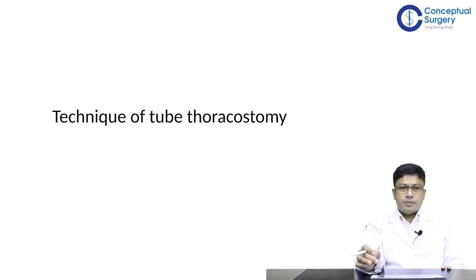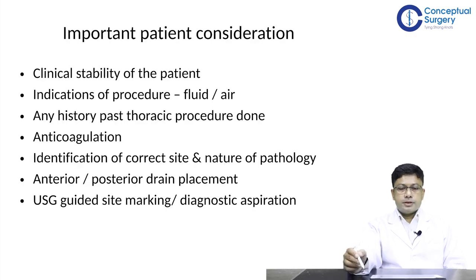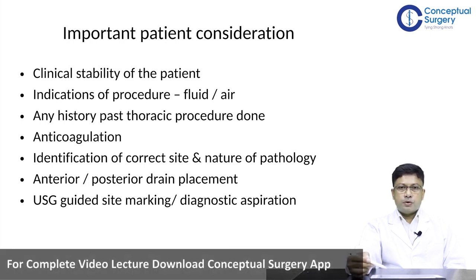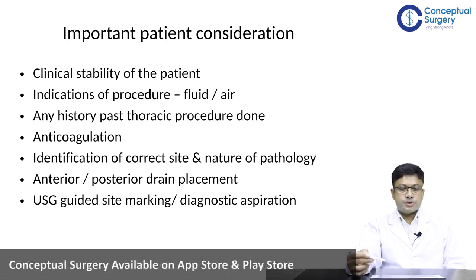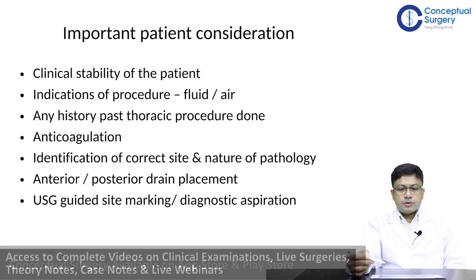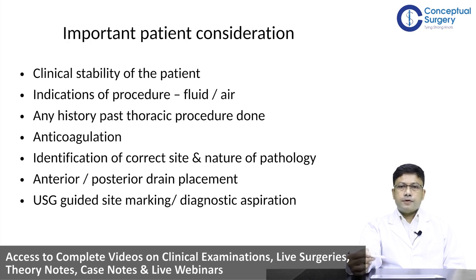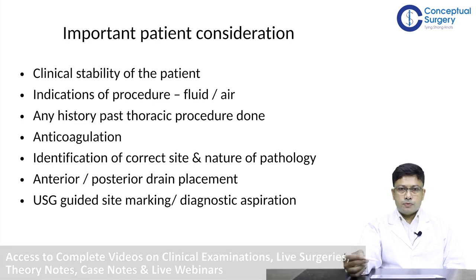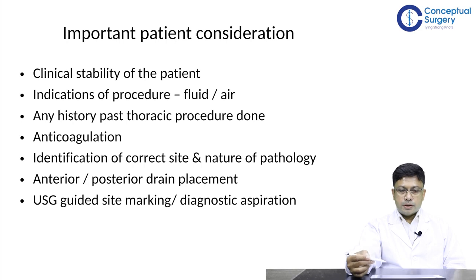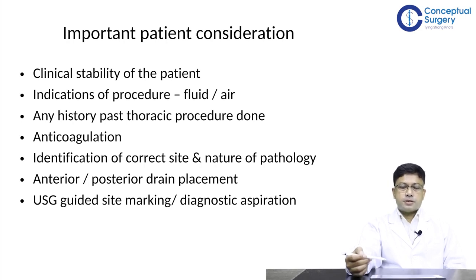Surgical residents need to clinically evaluate the patient at the time of tube thoracostomy. They should assess the patient's vitals and determine whether the patient is stable enough for chest tube insertion in the ward or needs to be shifted to the operating room or ICU. One should know the indication — whether the tube is for draining air or fluid. For draining air, a thin-bore tube like 20–24 French is sufficient. For viscous fluids like blood or thick empyema, a wider bore tube such as 28, 32, or 36 French is required.